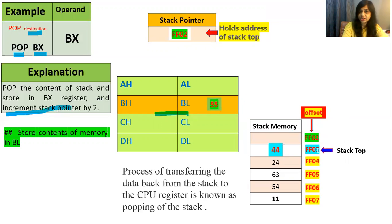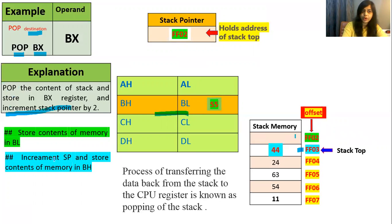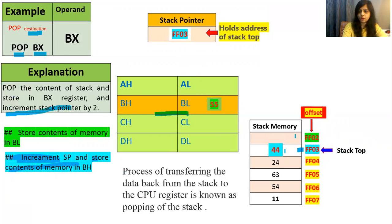After this transfer, the stack top has changed because FF02 is now empty. The data is now filled up to FF03, making FF03 the new stack top. So the stack pointer increments by 1 to FF03. Then, whatever is at FF03 — which is 44 — gets transferred into BH register.